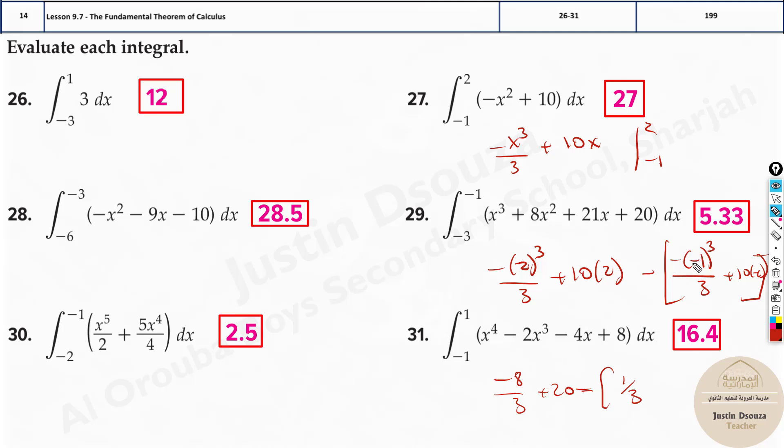So it'll be 1 thirds. Why? Because minus 1, the whole cube is minus 1 itself. Then you multiply this minus, it'll be plus 1. 1 by 3 plus 10 times minus 1 will be minus 10.